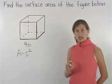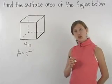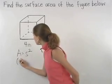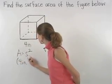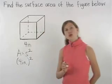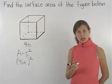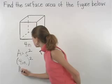Since the length of a side is 4 inches, we have 4 inches squared, or 4 inches times 4 inches, which is 16 inches squared.